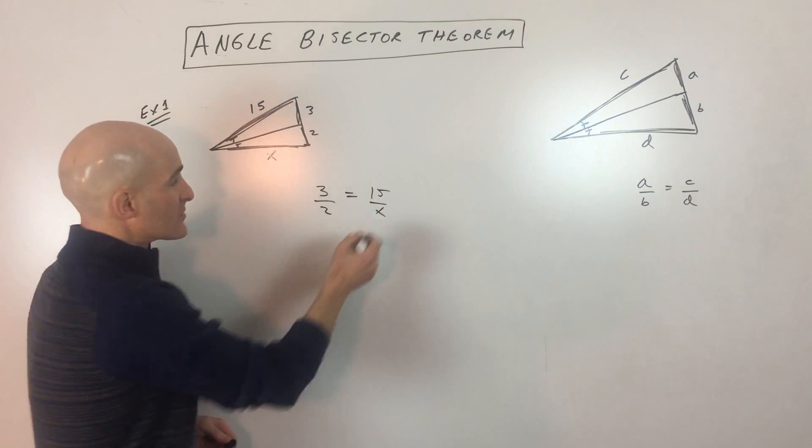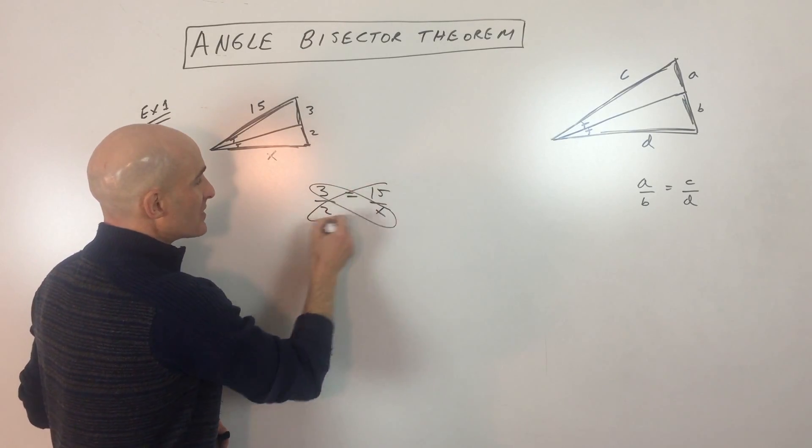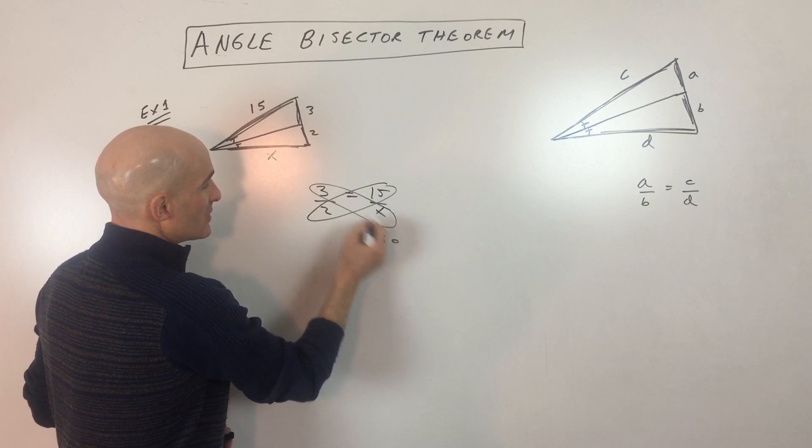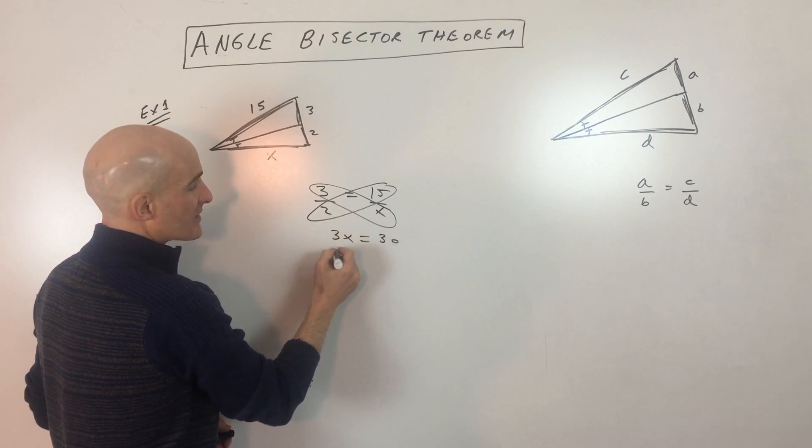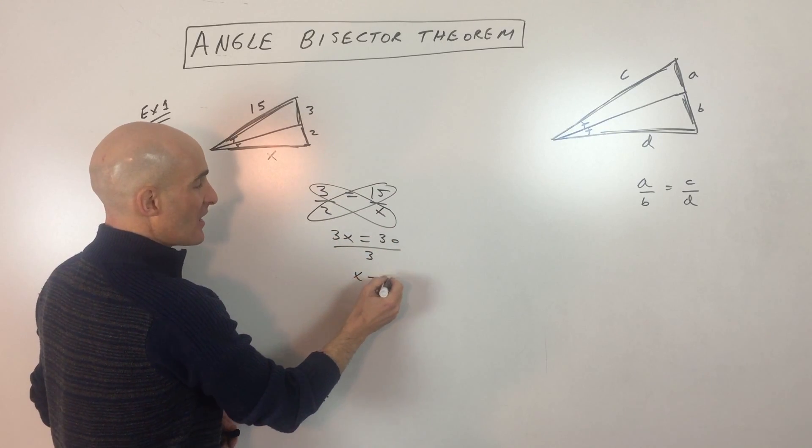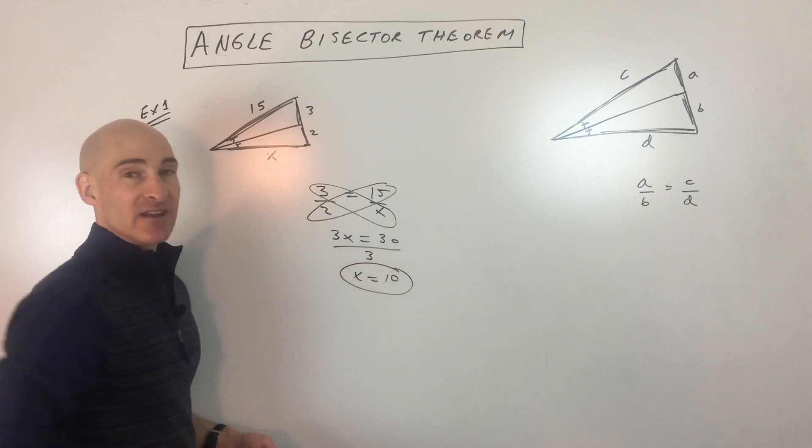All we have to do now is cross-multiply and solve. So it's 15 times 2, which is 30. 3 times X is 3X. Divide both sides by 3, and you can see that X equals 10.